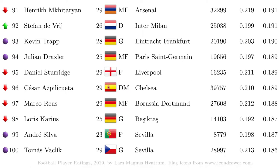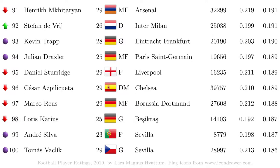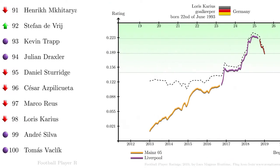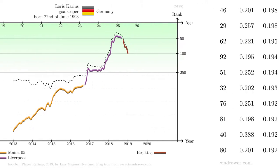At number 98 in the list we have Loris Karius, down 46 positions since the previous list. The rating of Karius is based on the results he has achieved. Does this graph show what a lack of self-confidence can do to a goalkeeper, and just because of what happened in one high-profile match, which then snowballed? Will he ever come back, and if so, to which level?